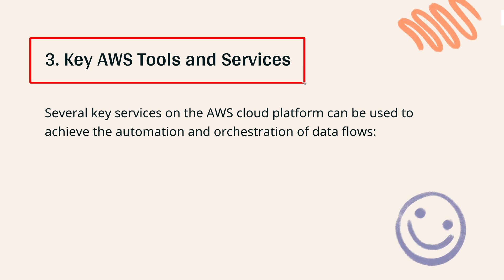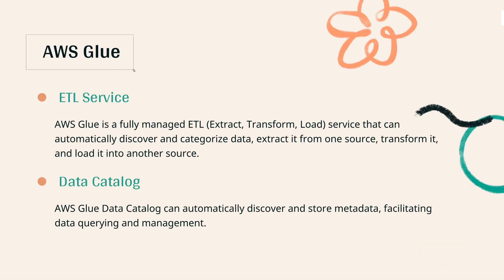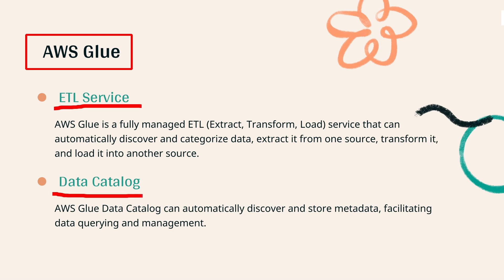We can use several AWS services to automate and orchestrate data flows. AWS Glue automatically discovers and categorizes data, processes and transforms it, and stores metadata about data, making it easier to query.